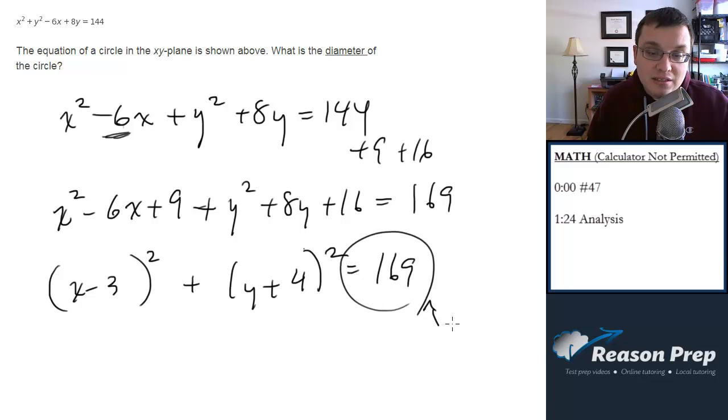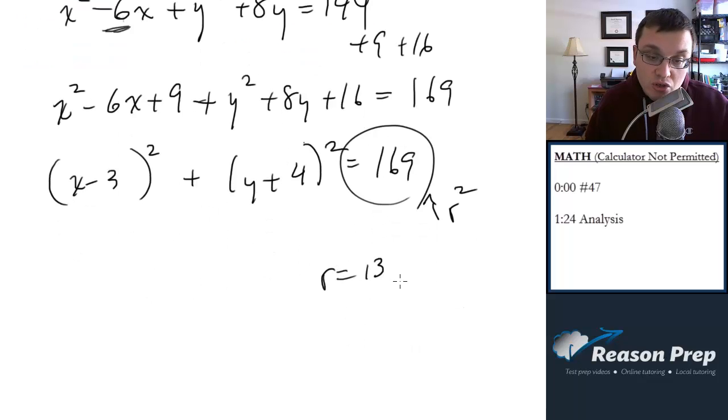Now remember this is equal to radius squared. So let's square root this. The square root of 169 is 13 but we want the diameter so it's twice the radius which is 26 and that's the answer.